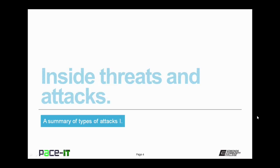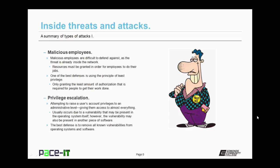We will begin with inside threats and attacks. The first inside threat is malicious employees. Malicious employees are difficult to defend against as the threat is already inside the network. You must grant them resources in order for them to do their jobs, but one of the best defenses against malicious employees is using the principle of least privilege. This principle is only granting the least amount of authorization that is required for people to get their work done.